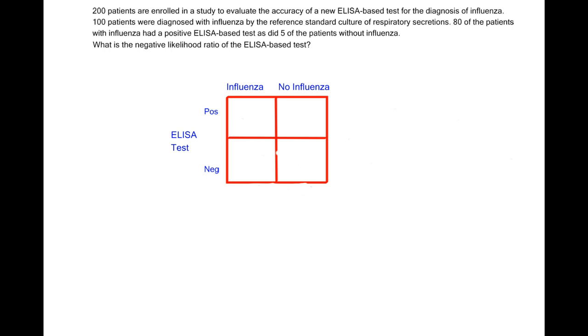So 200 patients are enrolled in a study to evaluate the accuracy of a new ELISA-based test for the diagnosis of influenza. 100 patients were diagnosed with influenza by the reference standard culture of respiratory secretions. 80 of the patients with influenza had a positive ELISA-based test, as did 5 of the patients without influenza. So what's the negative likelihood ratio of this ELISA-based test?